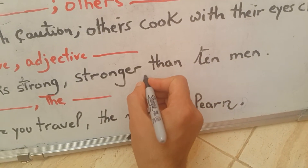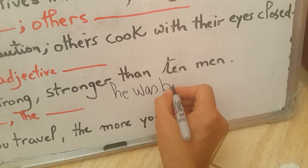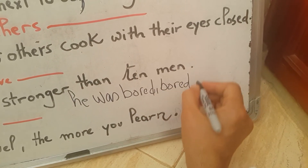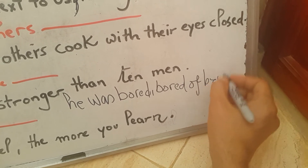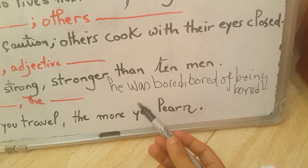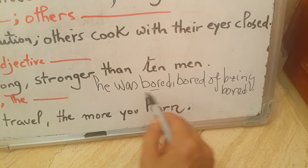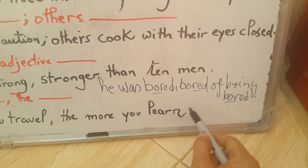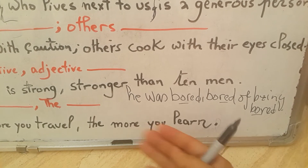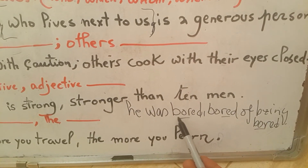Let me give you another example: 'He was bored. Bored of being bored.' You can see the repetition of the word 'bored'. Probably the writer is feeling bored, and so is the sentence — the sentence also sounds really, really boring.